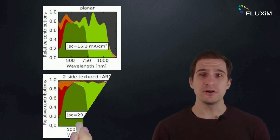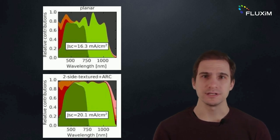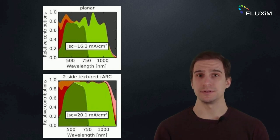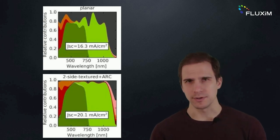The texturing of both sides of the silicon subcell brings a clear improvement in the light absorption at wavelengths larger than 750 nanometers. The current increases by almost 23% compared to the planar device.